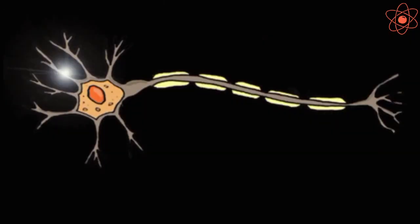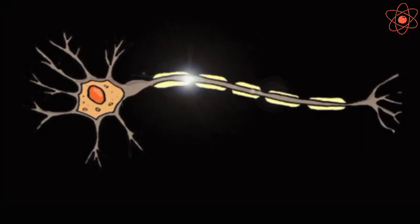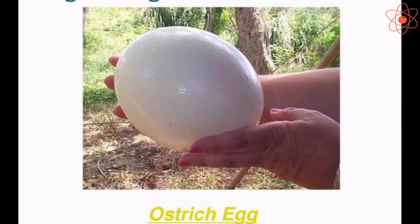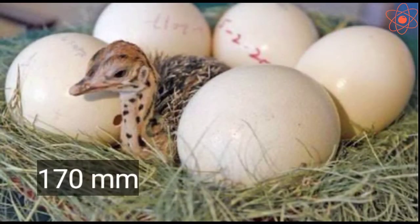In our body, nerve cells are the longest cells. The ostrich egg is the largest cell among all living organisms. It is about 170 mm in diameter.